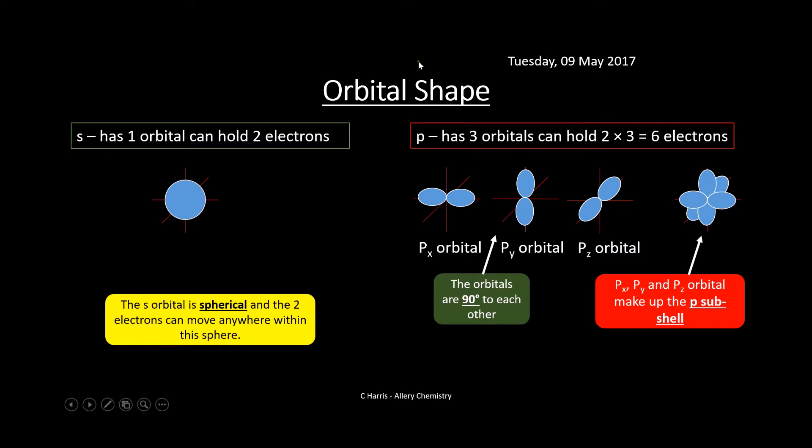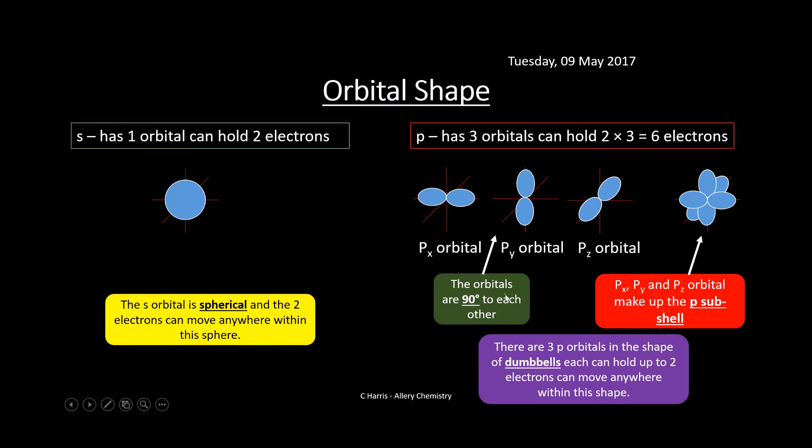We need to know all these shapes and recognize them. Three P orbitals, dumbbell shaped, hold two electrons, can move anywhere within this shape. That's where the electron can move.